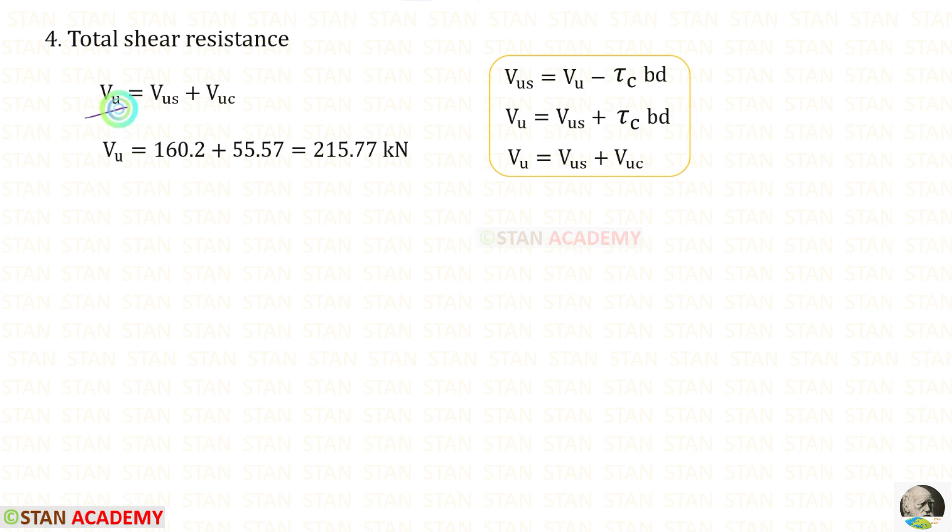To find VU, we have to add VUS and VUC. For VU, we will get 215.77 kN. Now, we are going to end this session. Thank you for watching this video.